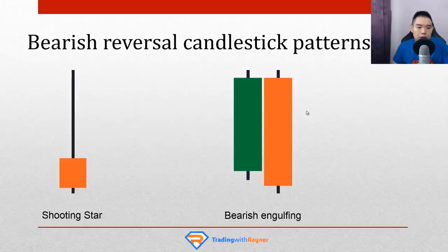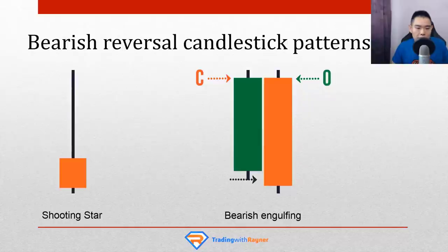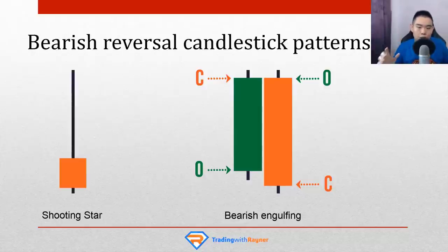For the bearish engulfing pattern, it's a similar story told over two candles. The first candle is bullish — buyers were happy, closing near the highs. But the second day, sellers took control and pushed the price all the way down, exceeding even below the lows and opening price of the previous day, closing near the lows. The buyers were defeated, and the sellers have temporarily won the war.